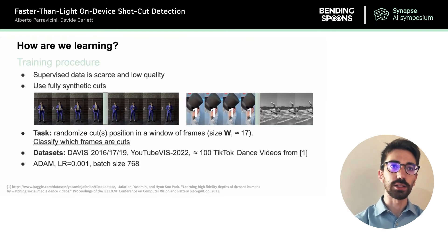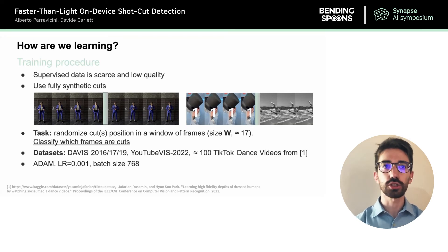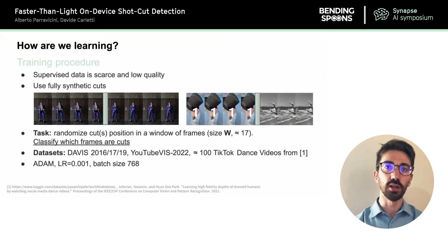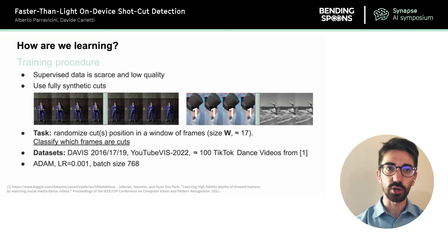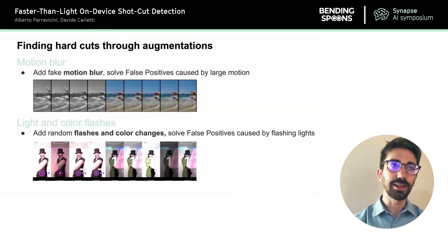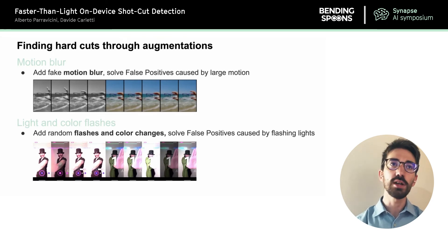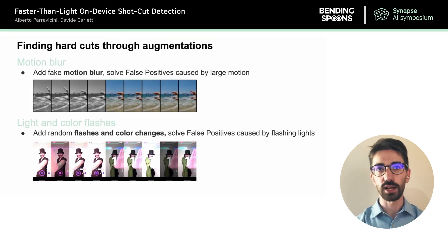To train our model we do not rely on annotated data as in previous work, but instead employ only synthetically generated cuts. Annotated data is scarce and mostly composed of movies rather than social media videos — our target domain. We generate cuts by joining two random shots or by joining different parts of the same shot. We randomize the location of the synthetic cut within a window of 17 frames and predict which frame contains the cut. We also introduce augmentations such as motion blur and random frame-wise changes of brightness and color to reduce false positives when processing videos in the wild.